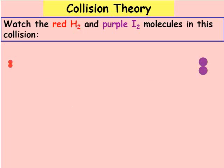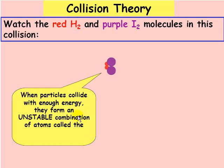Let's consider this collision, this time with a little more kinetic energy. When the particles collide with enough energy, they form an unstable combination of atoms. This is called the activated complex. And in this case, it has the formula H2I2.